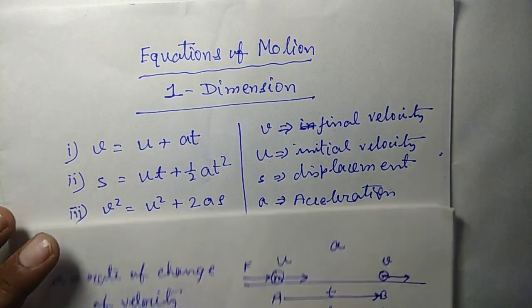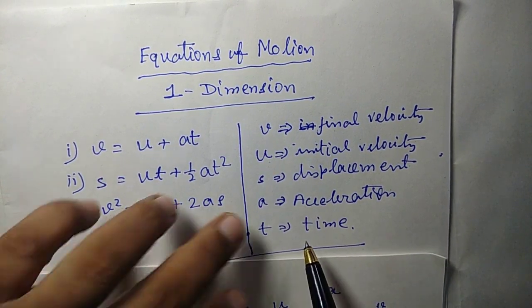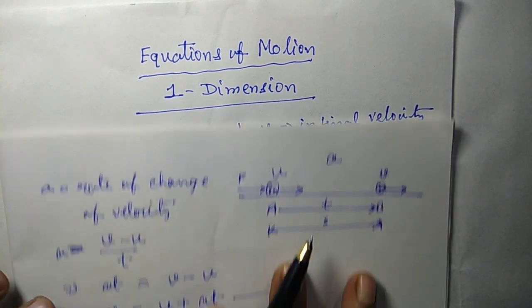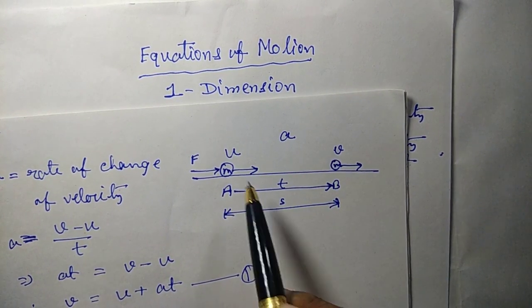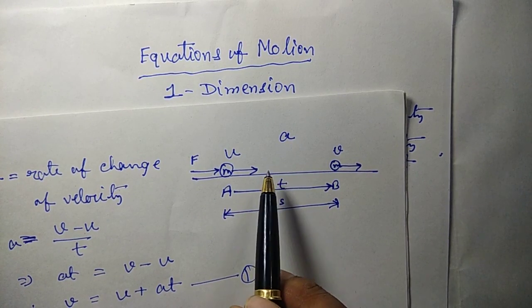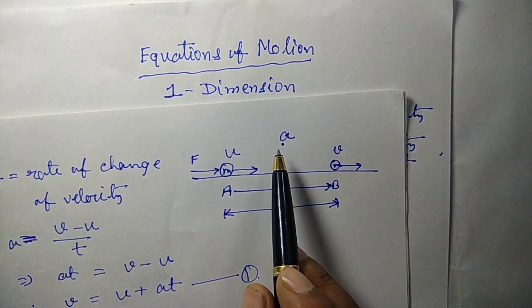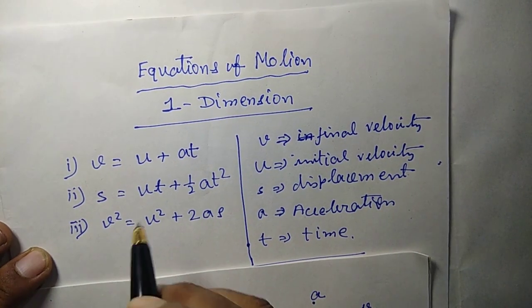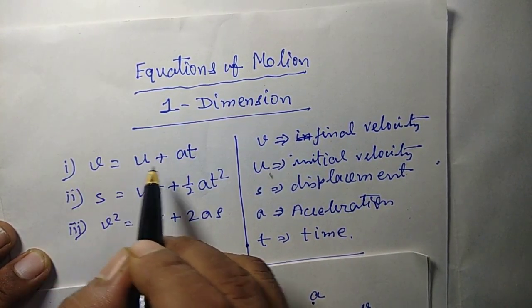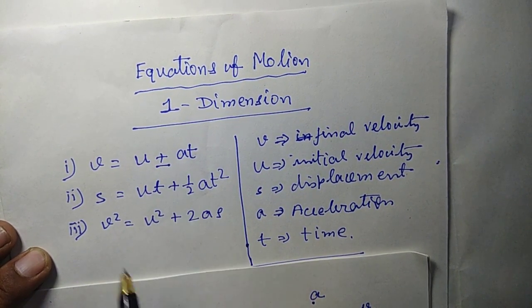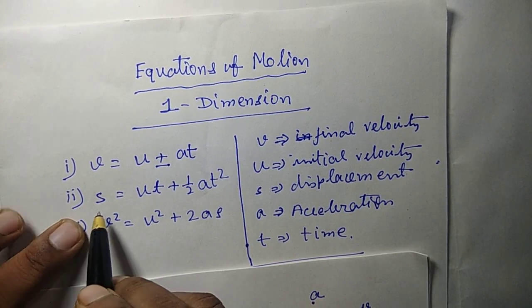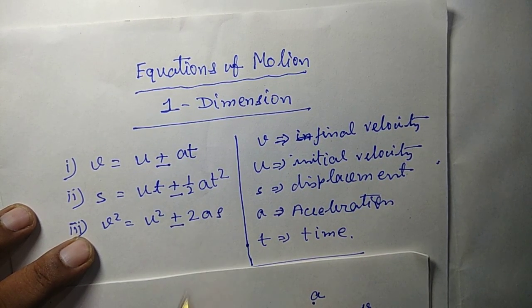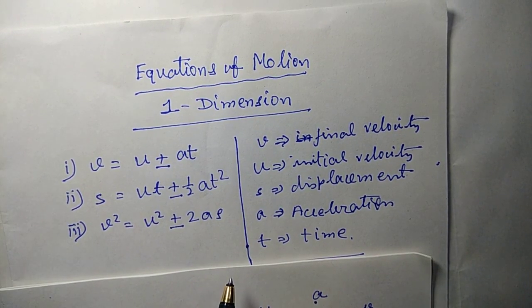One important thing to mention: we considered v, u, s, and a as vectors. Here we considered a as acceleration, meaning velocity is increasing. But when velocity decreases, it becomes a retardation or negative acceleration. In that case, the equations become v equals to u minus at, s equals to ut minus half at square, and v square equals to u square minus 2as. So minus will be there for retardation or negative acceleration.